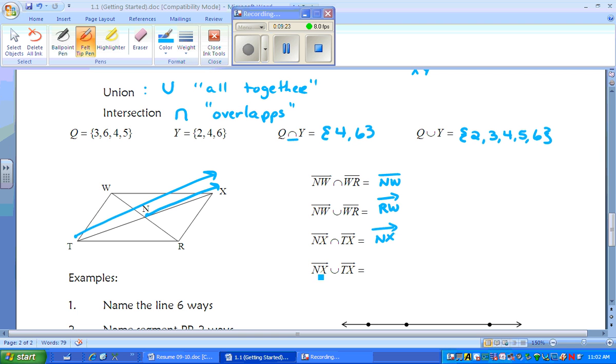The next one says ray NX union TX. You put it together and you look at it. Well, they're all overlapping and we created all together TX, and it's a ray because it goes beyond.